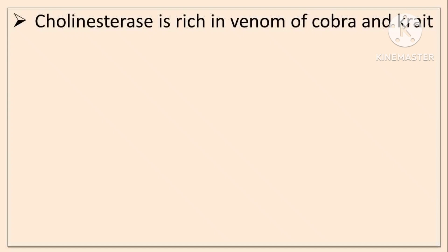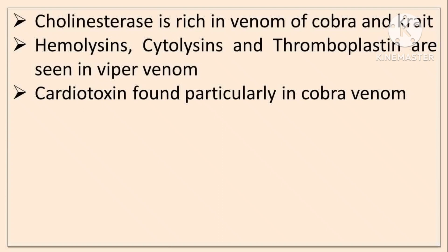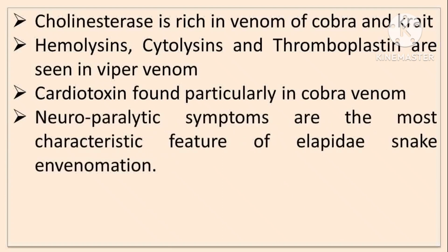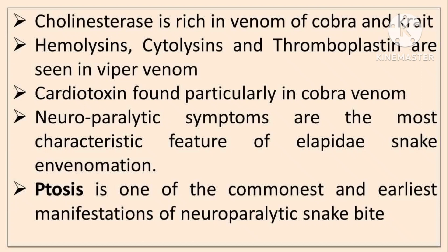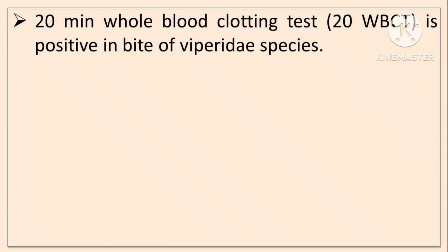Cholinesterase is rich in the venom of Cobra and Krait, making them neurotoxic. Hemolysins, cytolysins, and thromboplastins are seen in Viper venom, making it hemotoxic or vasculotoxic. Cardiotoxin is found particularly in Cobra venom. Neuroparalytic symptoms are the most characteristic feature of Elapid snakes — Cobra, King Cobra, and Krait. Ptosis, or drooping of eyelids, is one of the commonest and earliest manifestations of neuroparalytic snake bite. Sea snakes cause muscular paralysis as they are myotoxic. The 20-Minute Whole Blood Clotting Test (20WBCT) is positive in Viper bites. A single breath counting test is done in suspected Elapid bites.